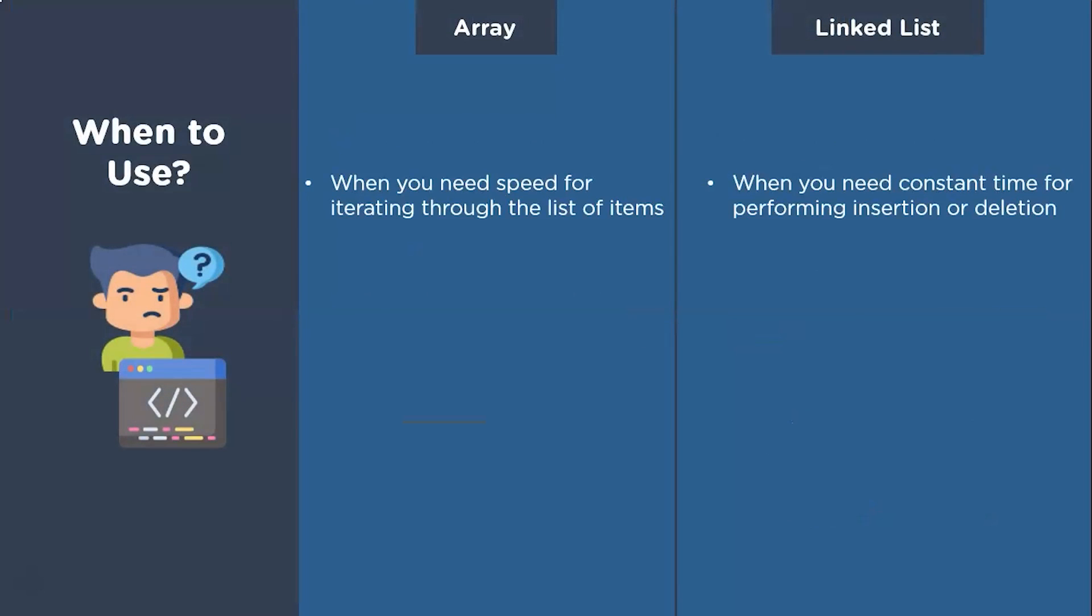Having said that, let's have a look at which data structure to use in different conditions. As we have seen earlier, insertion and deletion in linked lists can be achieved in constant time. Thus, when you require your application to handle data insertion and removal at a rapid speed, a linked list is the way to go. Whereas, if you want to traverse your list faster, arrays are preferred over linked lists.